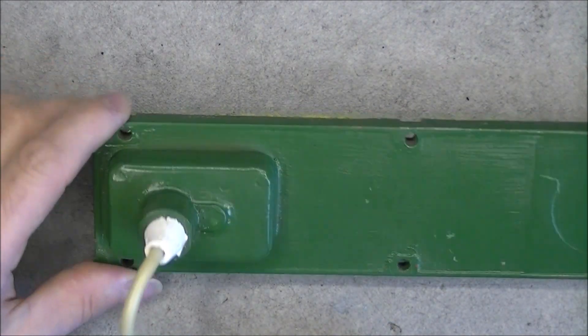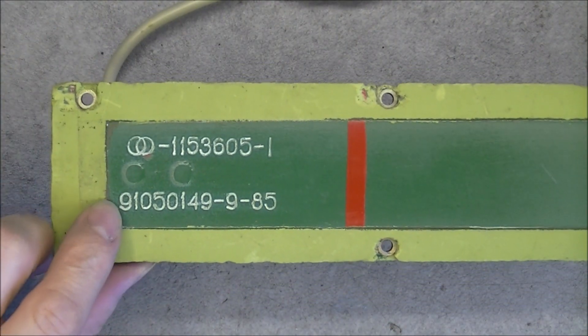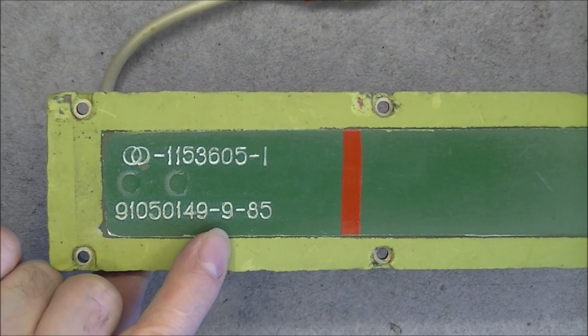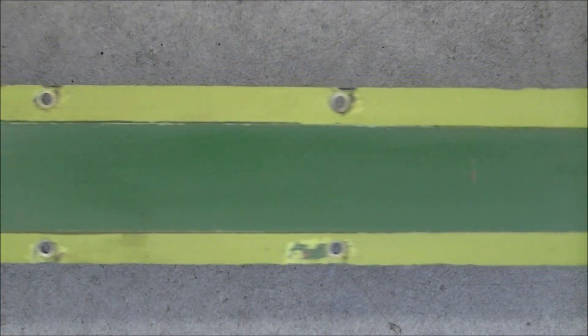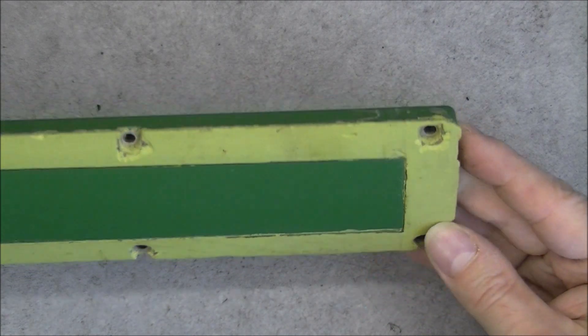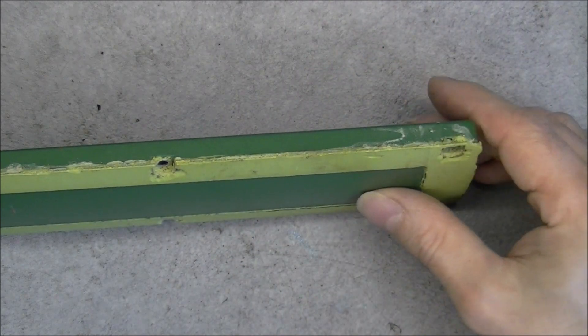The other side obviously has Soviet markings. This might be a date code, and nothing else to see until the end here, just screw holes with remaining washers in the screws.